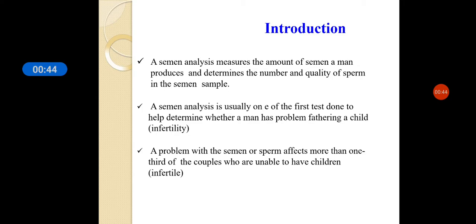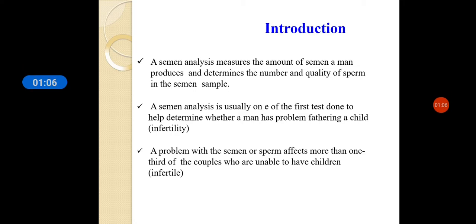What is semen analysis basically used for? You should know the indications. Primarily it is used to investigate infertility — that is the most important indication. Another indication is to check the effectiveness of vasectomy; when vasectomy is done as a part of sterilization, you can check effectiveness by detecting the presence of sperms.